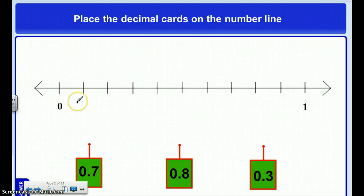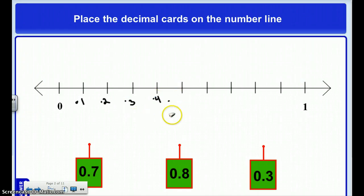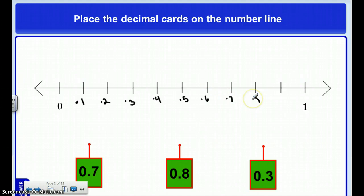I'm going to label: 1 tenth, 2 tenths, 3 tenths, 4, 5, 6, 7, 8, and 9. And 10 tenths would be one whole.